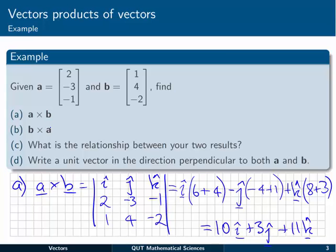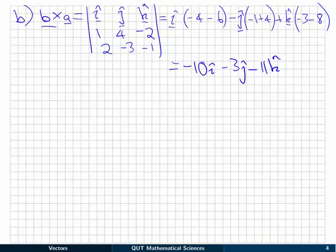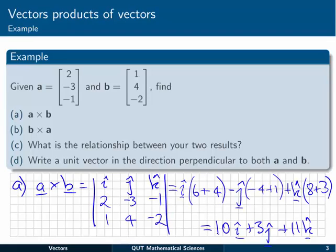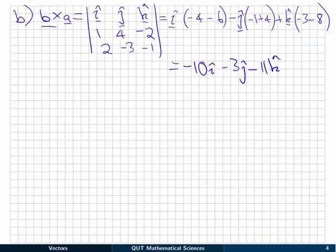Now do the same for the b cross a, part b. This time when we expand the determinant, we end up with minus 10i minus 3j minus 11k. Looking back, this is exactly the same as a cross b, with all minus signs instead of plus signs. So to answer part c, what is the relationship between the two results, we can say that the two results are just negatives of each other.